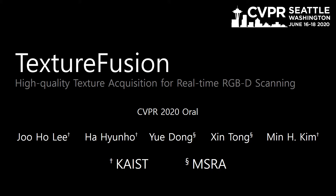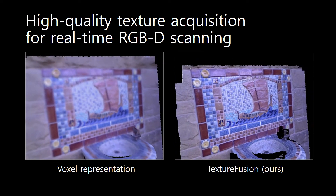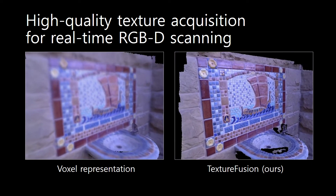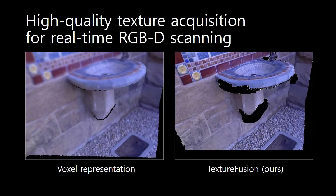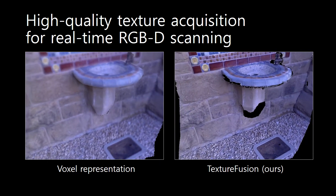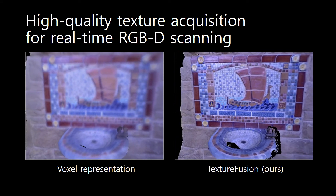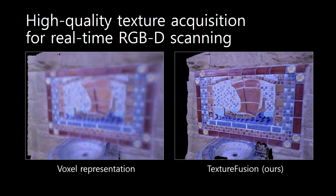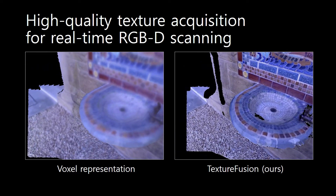We propose TextureFusion, high-quality texture acquisition for real-time RGBD scanning. Our main goal is real-time 3D scanning with high-quality texture. The existing real-time texture representation restores color for each voxel, resulting in the low-quality texture on the left. Our method on the right enables real-time 3D scanning with aligned texture in high quality.